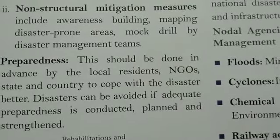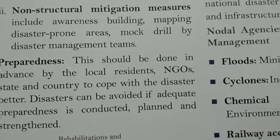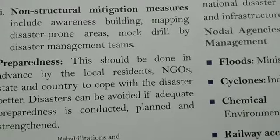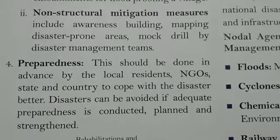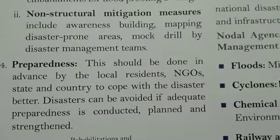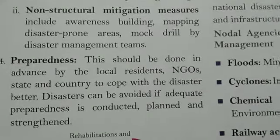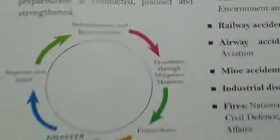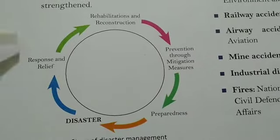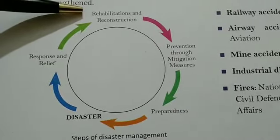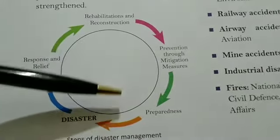The fourth phase is preparedness. This should be done in advance by the local residents, NGOs, state and country to cope with disaster better. Mental preparedness and physical preparedness both are very much important. Disasters can be avoided if adequate preparedness is conducted, planned and strengthened. Here you can see a diagram which shows the steps of disaster management: first, response and relief; then rehabilitation and reconstruction; then prevention through mitigation measures and preparedness.